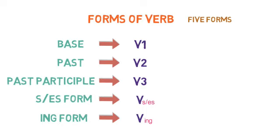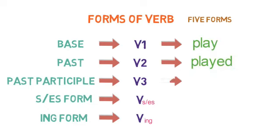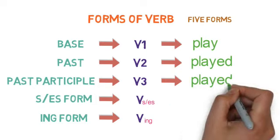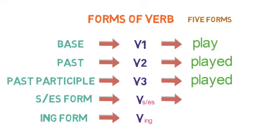Now, let's look into an example of verb PLAY. The base form of PLAY is play. In the past form, it is played. And in the past participle, it is played. In the S/ES form, it is plays. And in the ING form, it is playing.